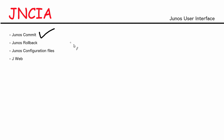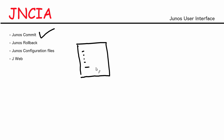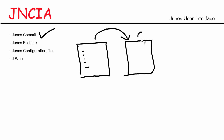Let's now talk about rollback. From the last video, we spoke about the differences between active configuration and candidate configuration. We discussed that the configuration currently loaded on the device is the active config. When you hit edit or configure, the device creates a copy of your active configuration, known as the candidate configuration. You're actually making changes on the candidate config and not on the active config. When you commit your changes, the candidate configuration gets saved as the current active configuration.